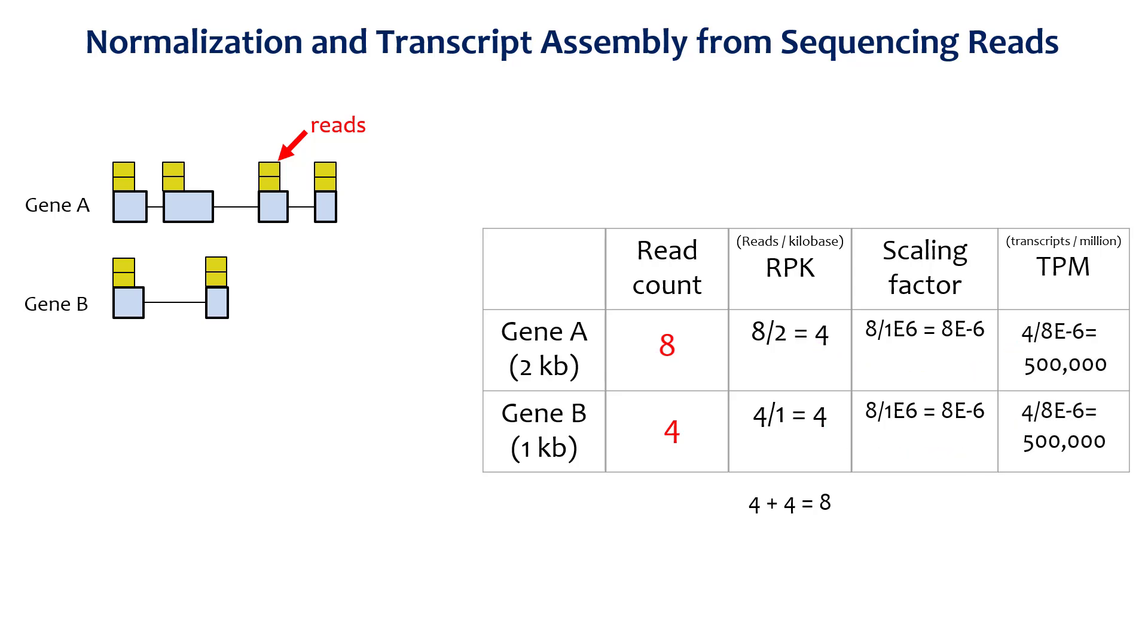In this case, gene A and gene B come from the same sample. This means they have the same sequencing depth, which explains why this step has no effect on their relative expression values. In other words, they have the same RPK values relative to each other, and the same TPM values relative to each other. The resulting TPM values indicate that gene A and gene B actually have the same expression, despite having a different number of read counts.